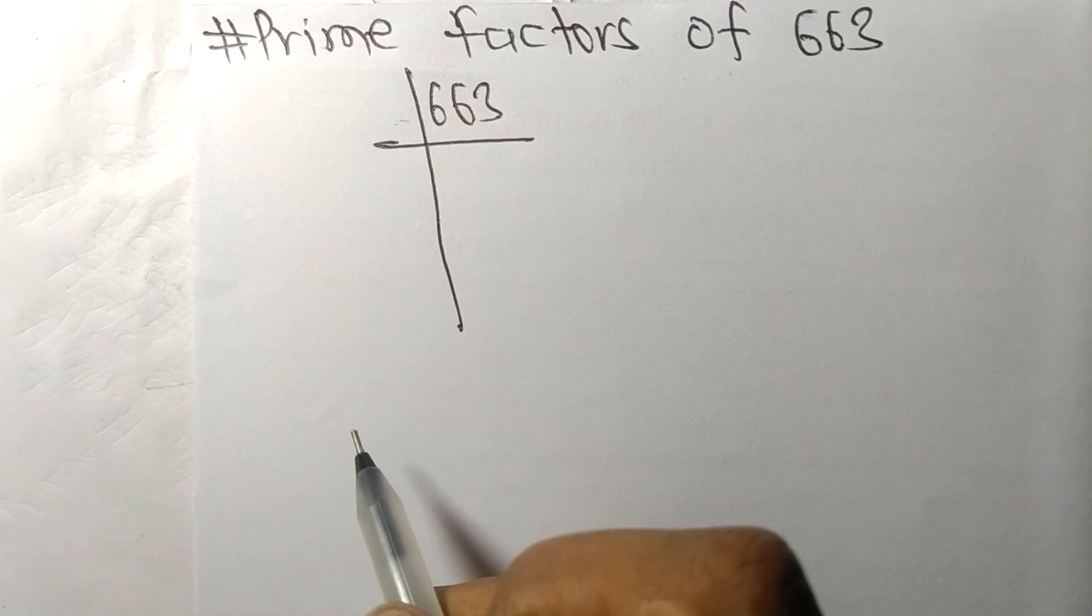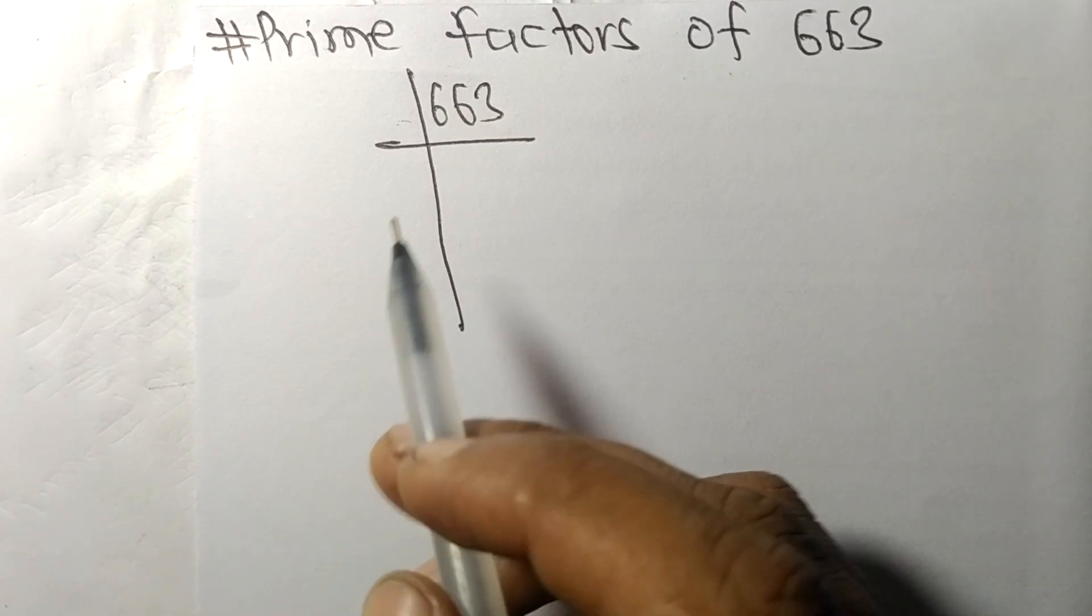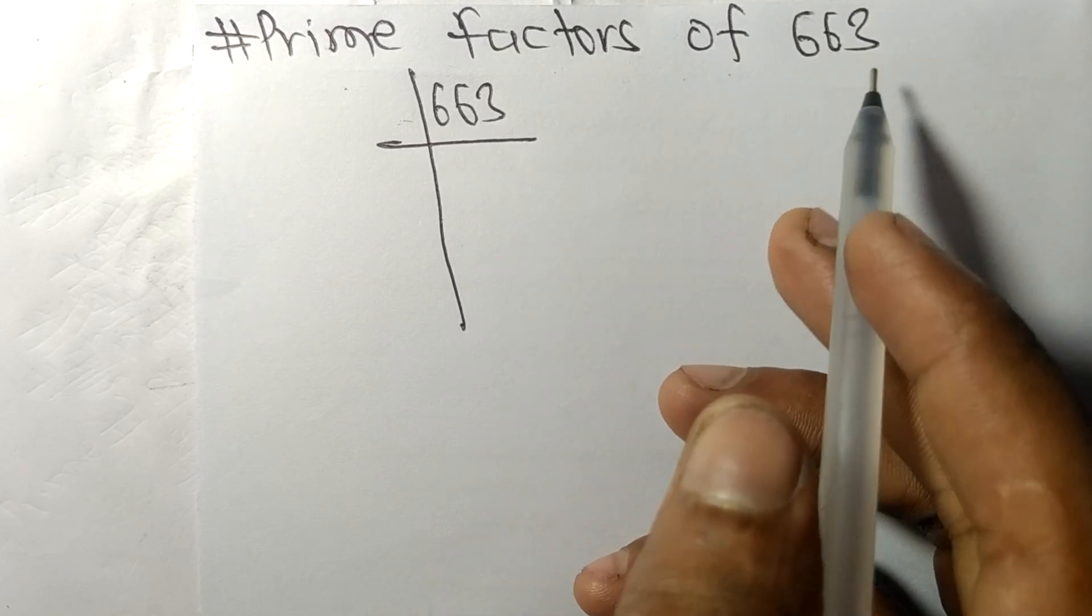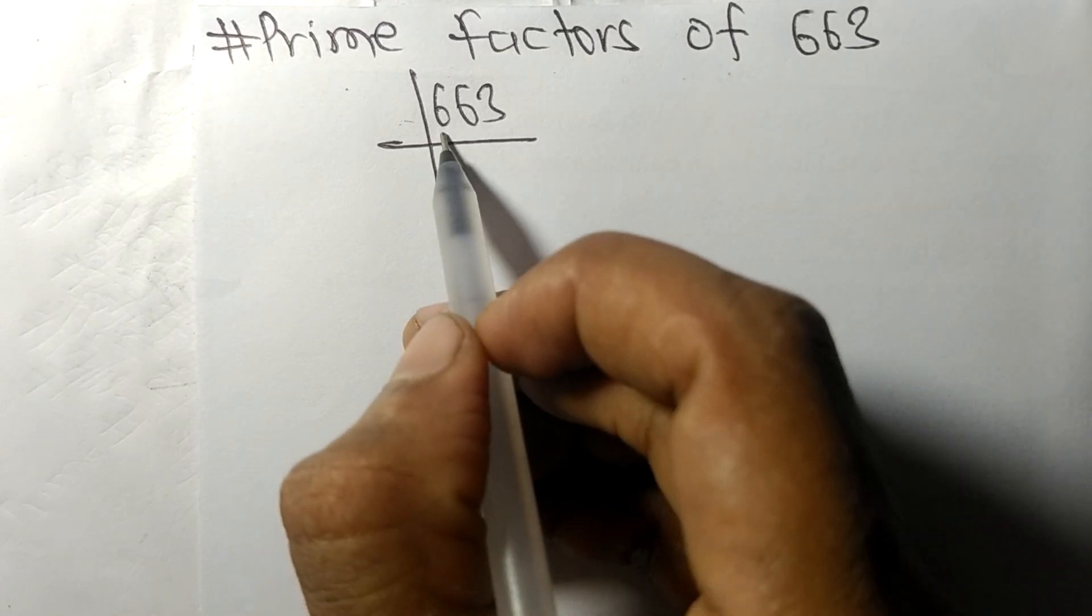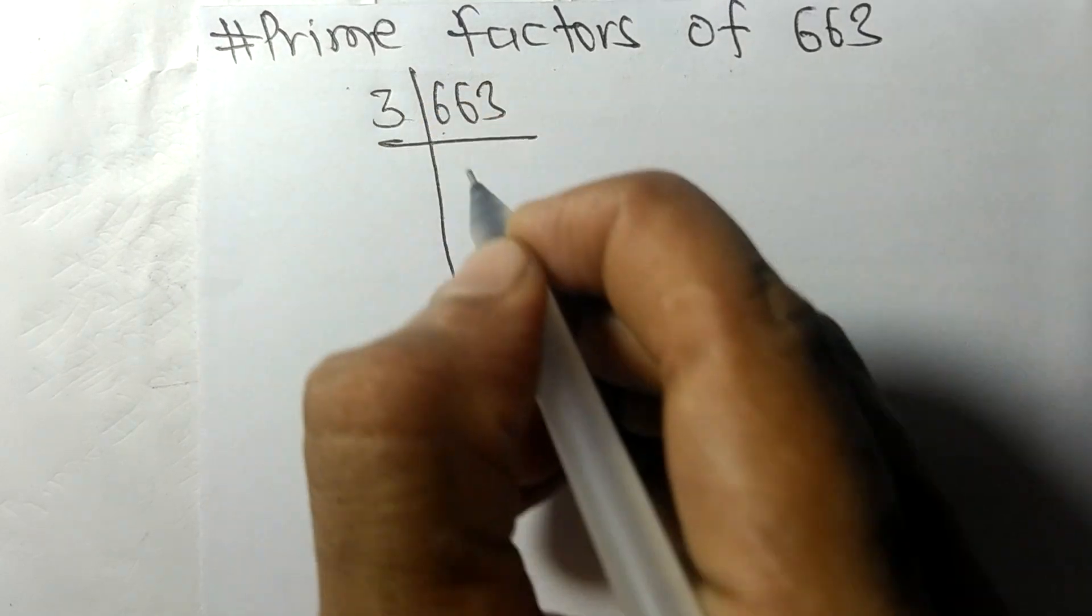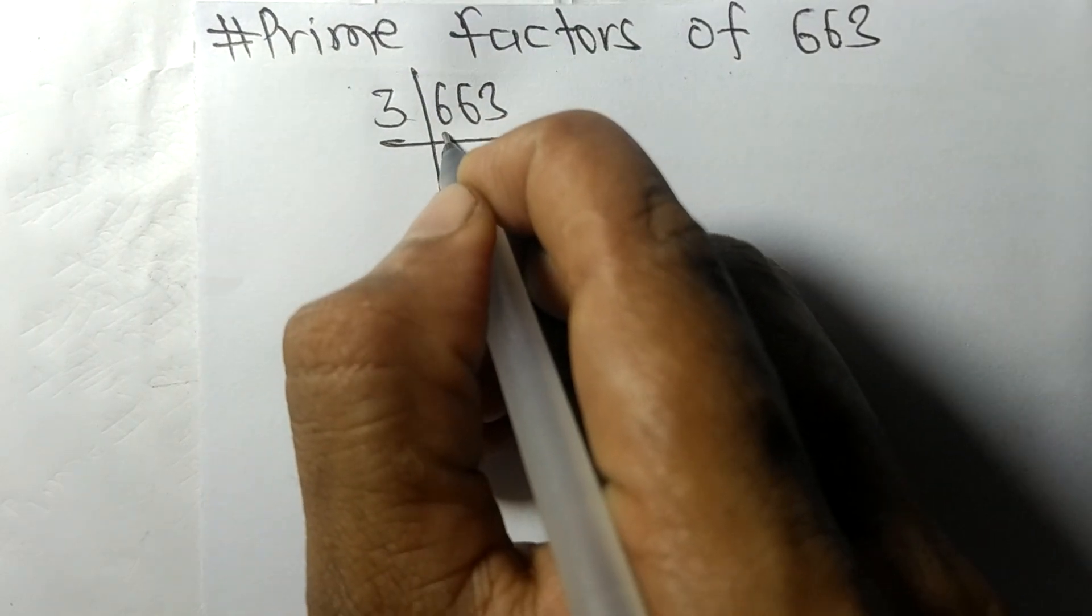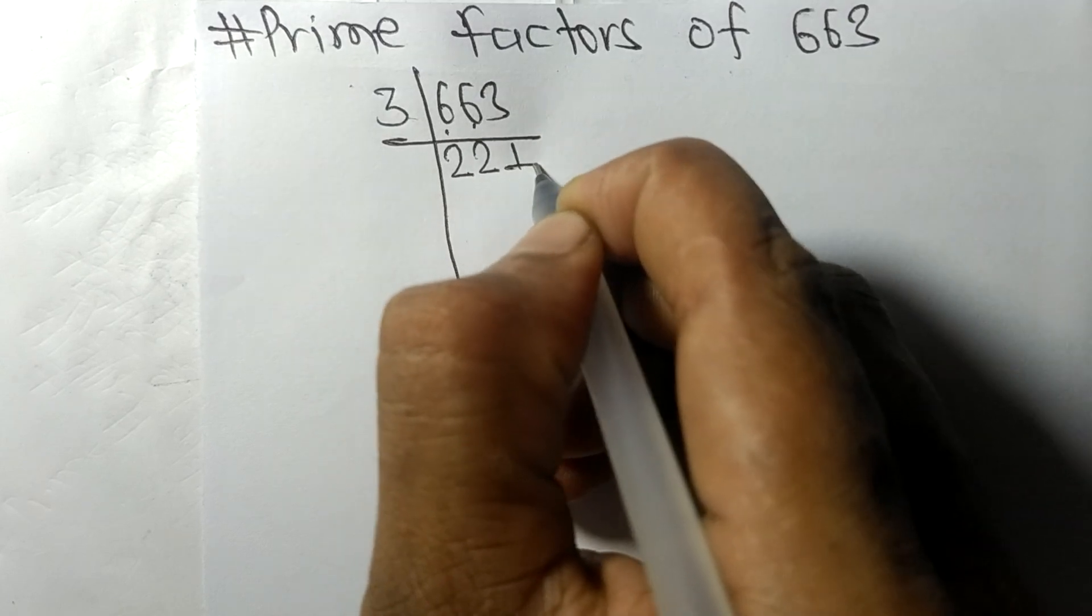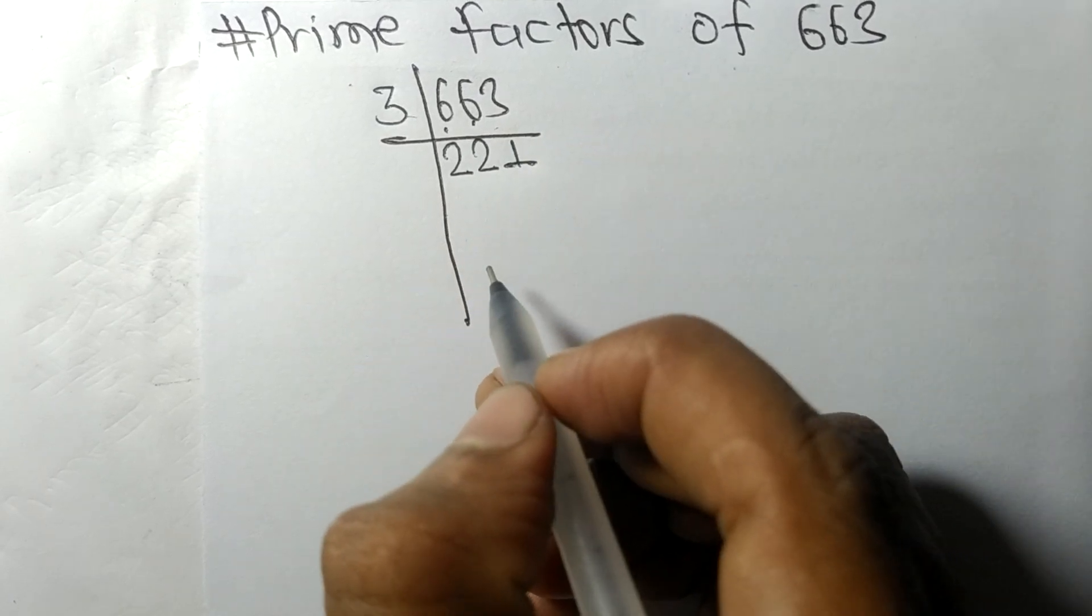So today in this video we shall learn to find the prime factors of 663. 663 is exactly divisible by 3. 3 times 2 is 6, 3 times 2 is 6, 3 times 1 is 3. So now we got 221.